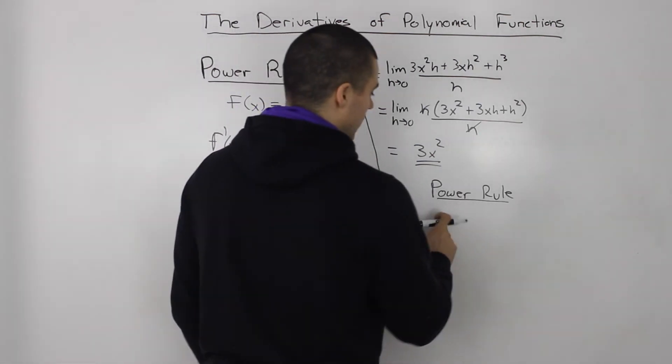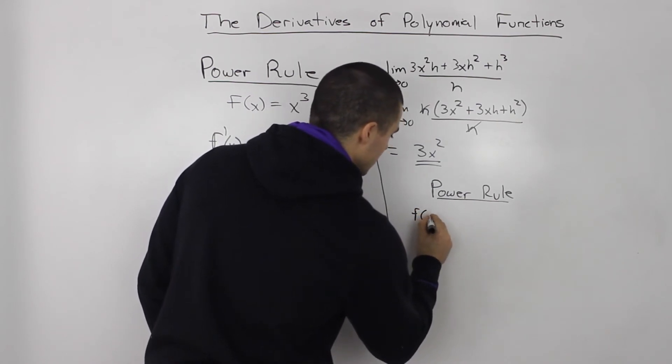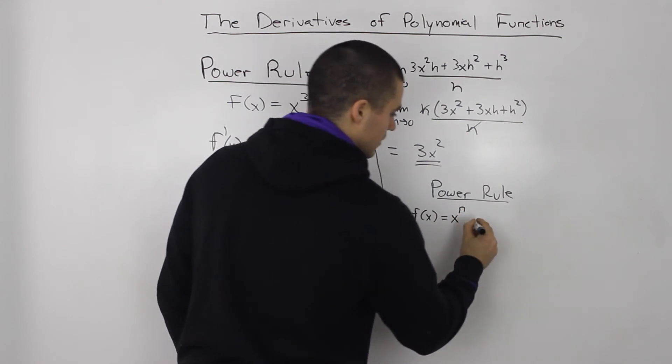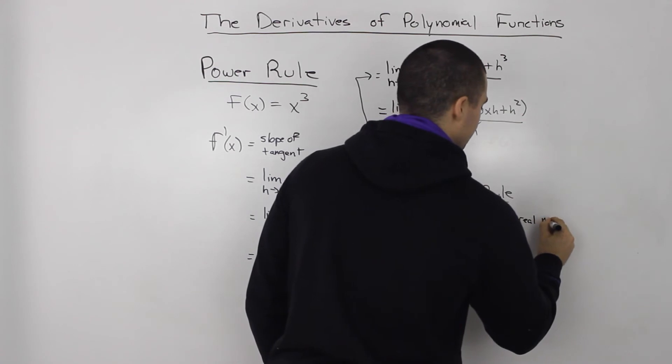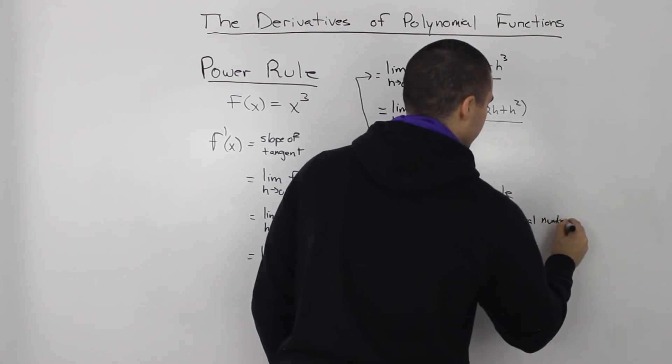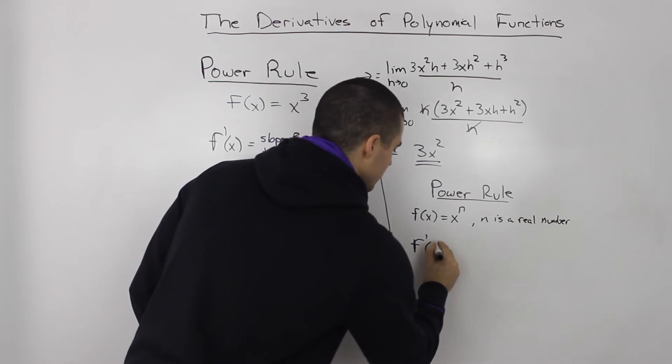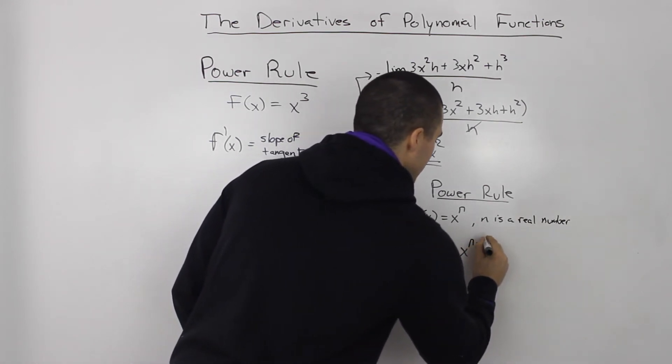Okay, so what's the power rule? Basically, if you have a function in the form of x to the power of n, where n is a real number, then that means the derivative is always going to be n times x to the power of n minus 1.